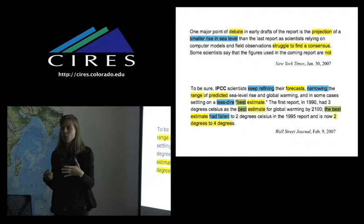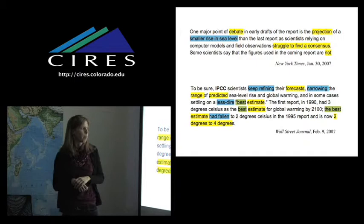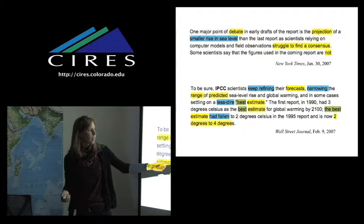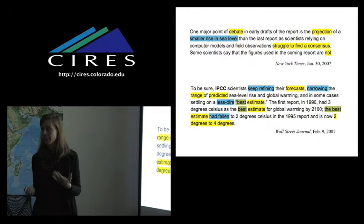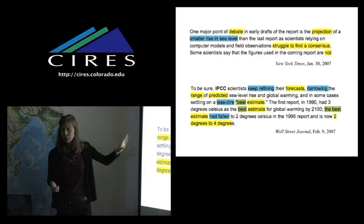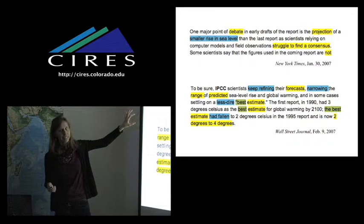And in some cases, sure, they're settling on a less dire best estimate. And then they give you even more information. The first report said three, then the next report said two, and now they're saying two to four. So in other words, they're giving us more of a range. They're giving us a lot more information. So that wasn't uniformly across the board. It's not as though the New York Times was consistently giving less contextualized information. This was just a particularly good example that I wanted to pull out where they were talking about similar subjects.